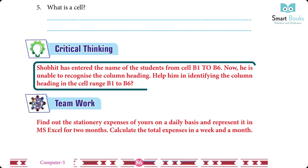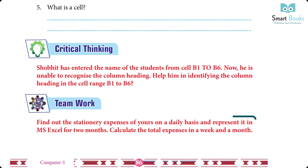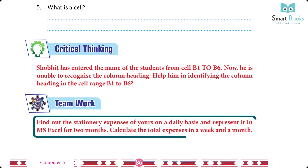Critical thinking: Showbiz has entered the names of students from cell B1 to B6 and is unable to recognize the column heading. Help him identify the column heading in the cell range B1 to B6 — Answer: students will do it themselves. Teamwork: Find out your stationary expenses on a daily basis and represent them in MS Excel for two months. Calculate the total expenses in a week and a month — Answer: students will do it themselves.